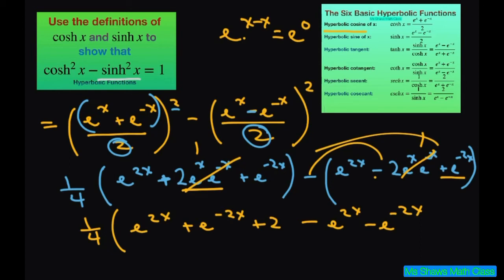Now, simplifying this, we get e to the 2x, these cancel out and these two cancel out. We get 2 plus 2 is 4. So, we're going to get 1 fourth times 4 and that equals 1 and that's your final answer. That's one way to do it. Thank you. Have a nice day. Bye-bye.